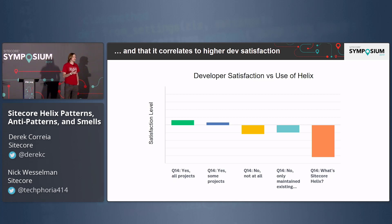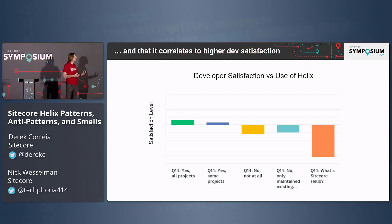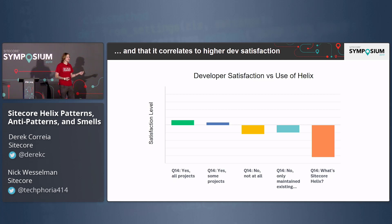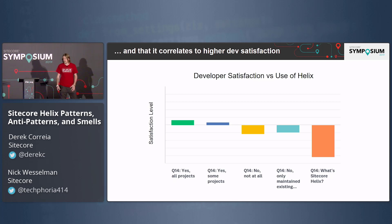Much like we saw last year, there's an interesting correlation between your satisfaction level as a Sitecore developer and the use of Helix, particularly among folks who are newer to the platform. When applying Helix, you're spending less of your time worrying about coupling, about dependencies and what might break when you change something, and more time adding value for your customers — which gives a lot more satisfaction as a developer when you're working on real business value and not on the technical glue.